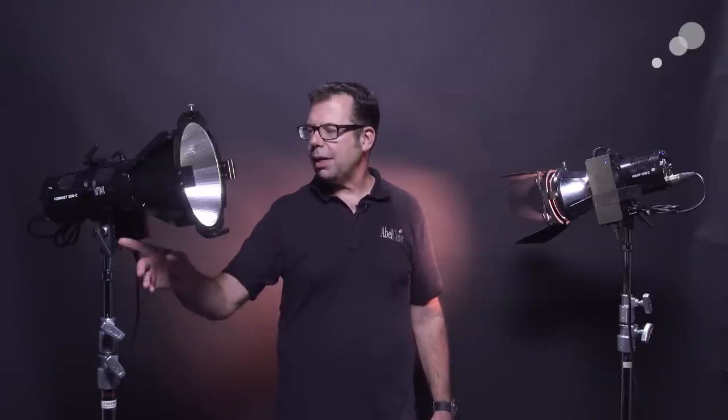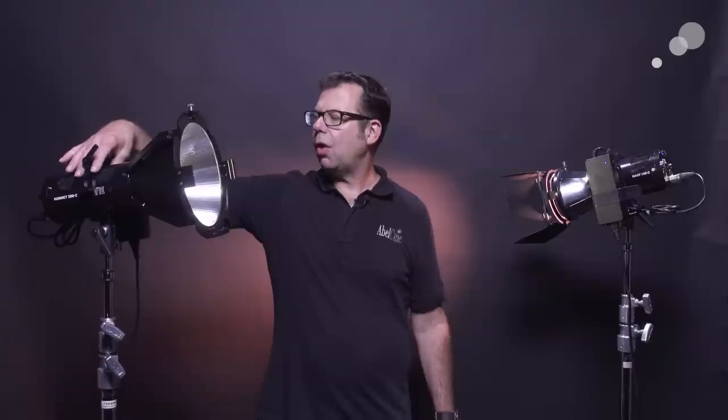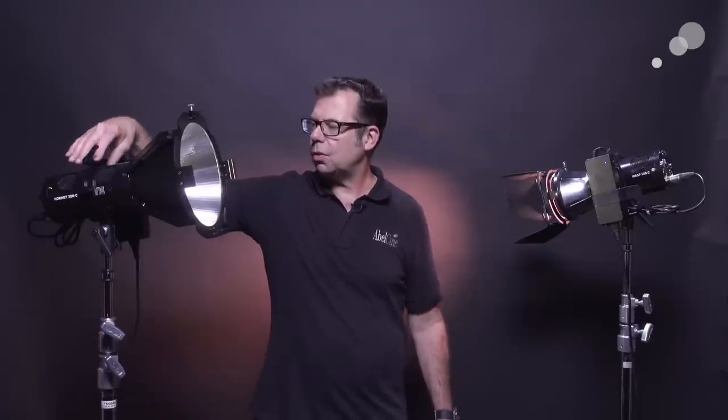It has a baby pin and it has a harness that holds it with this little strapping system however there is a quarter 20 on the back and we can rig it any way we want with a magic arm, anything that'll accept a quarter 20 we now have a means to rig this light and at two and a half pounds it really lends itself to being able to be rigged pretty much anywhere we want.